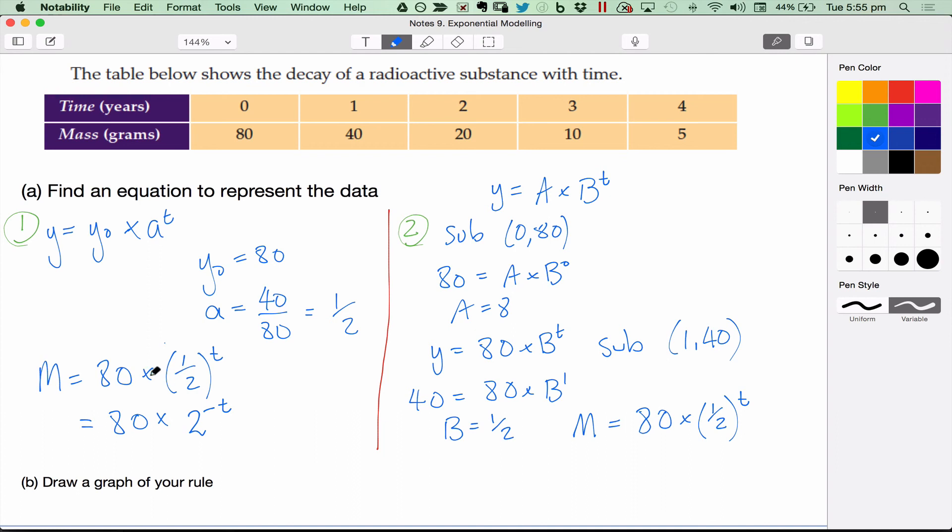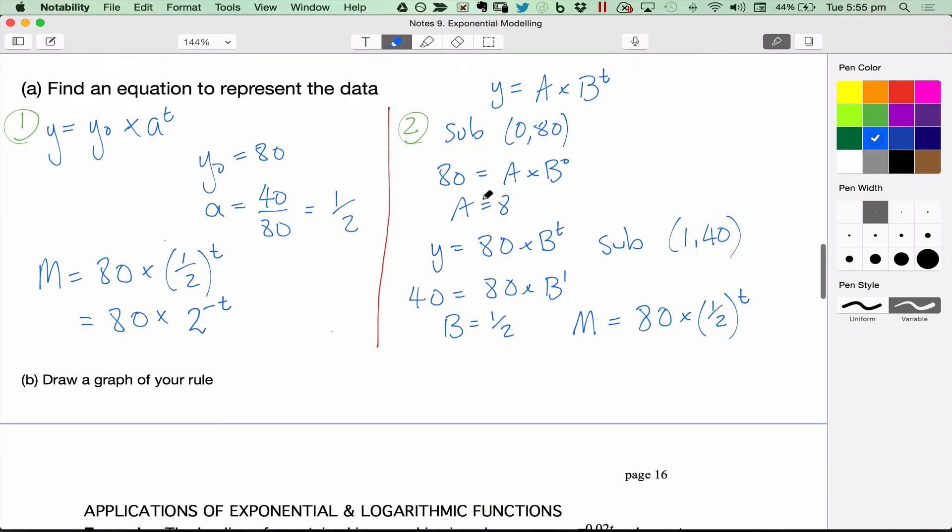Drawing the graph of this rule. Again, it's all in the labelling of the axes. It's going to be decay. Where does it start? 80. And this is time in years. And this is mass in grams.